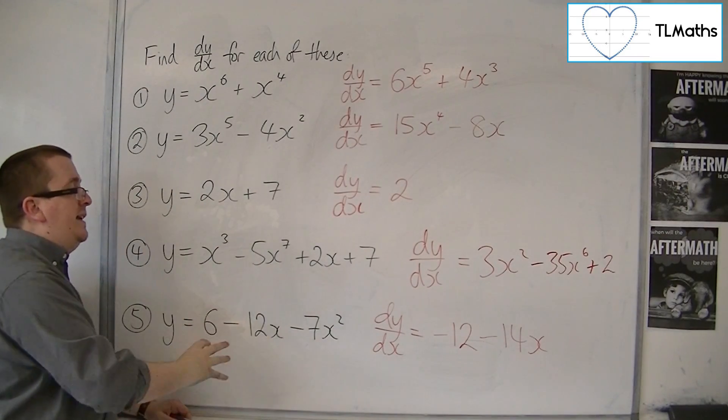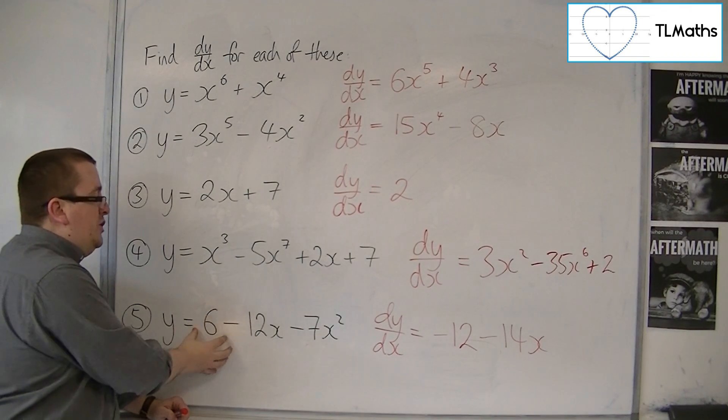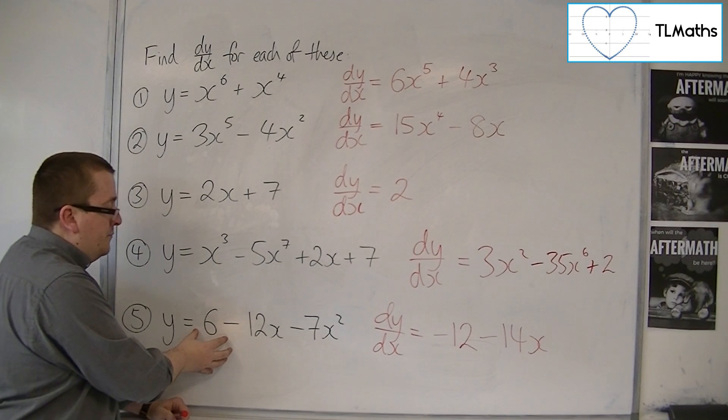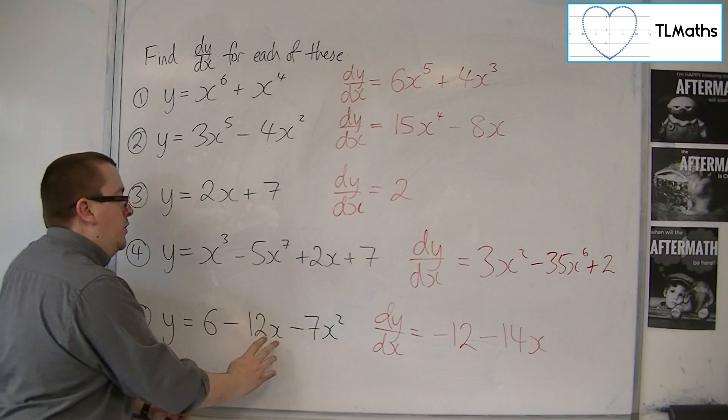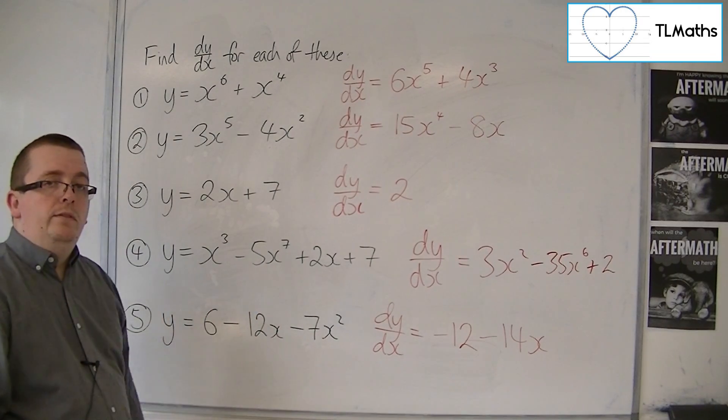Make sure that you identify the singular constant values without any x's next to them - they just differentiate to 0. And a linear term like this, the x just disappears. And that's how we can differentiate polynomials.